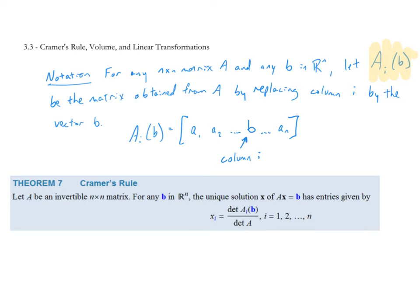Then Theorem 7, Cramer's Rule, states that I can solve systems of equations for my unknown variable X. X subscript i — that is X1, X2, X3, X4, X5, etc. — is the determinant of A subscript i of B divided by the determinant of A. So we can solve systems using determinants. The determinant of matrix A is always in the denominator, and the numerator is the determinant of A_i(B). You replace the i-th column — so replace the first column to find X1 with vector B — then take the determinant. That division gives us the solution to the system.